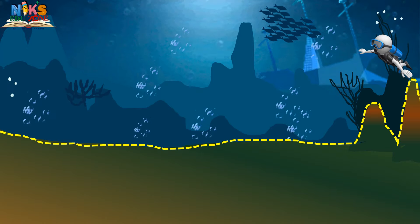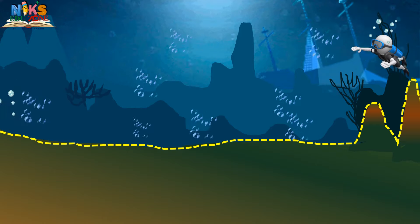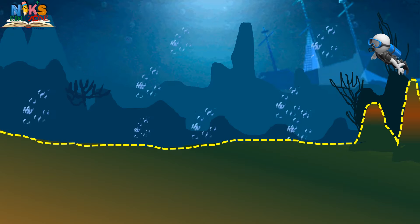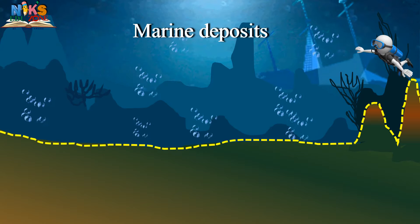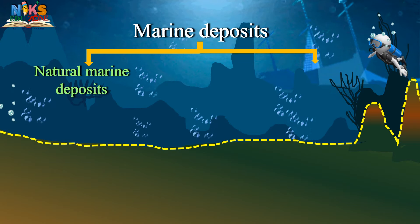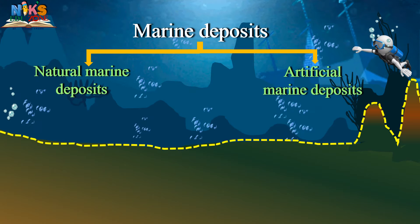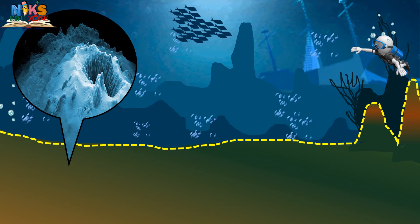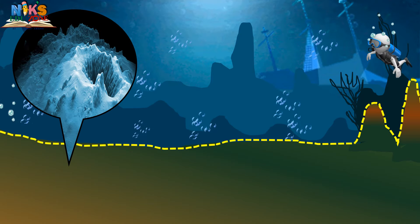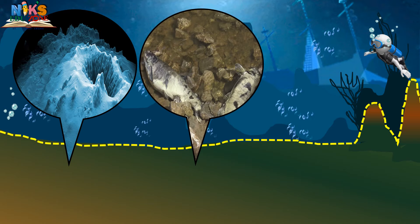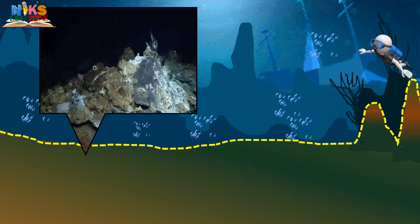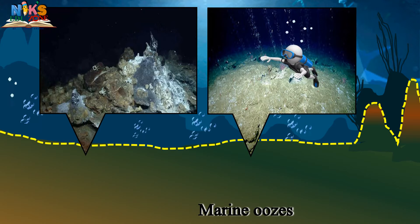We are back on the flat surface called the abyssal plain. The marine beds are the deep parts of the world, and various deposits get collected here — these are called marine deposits, of mainly two types: natural and artificial. Natural marine deposits include lava and ash from volcanic eruptions, fine soil particles deposited on a large scale, and remains of marine plants and animals forming fine clay called marine oozes, mainly found on the abyssal plain.